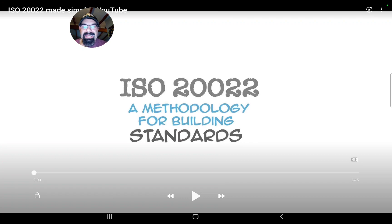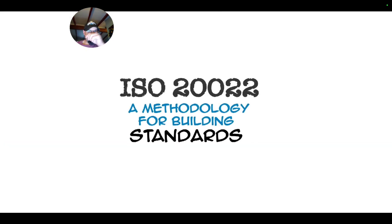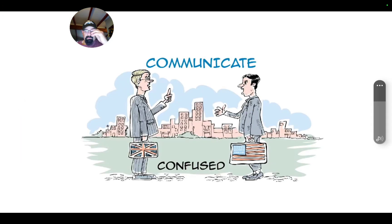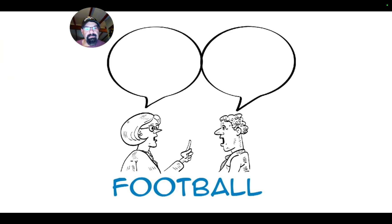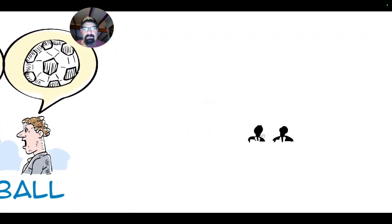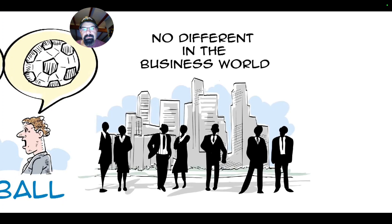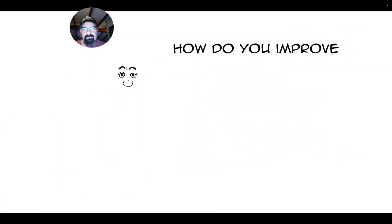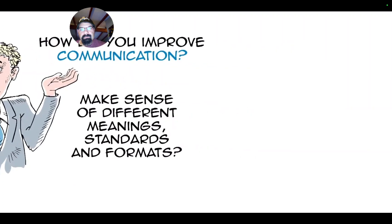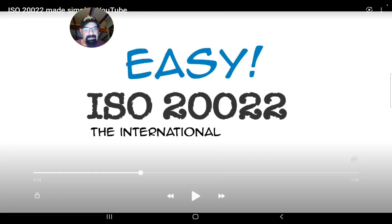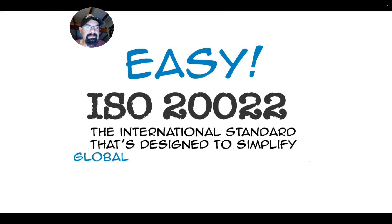It's interesting to see — I'll show you a couple different examples of what ISO-20022 is when they streamline it. Look at what they showed in 2012. When people communicate, they often get confused and end up misunderstanding each other. Take the word 'football,' for instance — it might mean one thing to an American and something entirely different to a Brit. Well, it's no different in the business world, where the stakes are way higher. A simple misunderstanding can lead to disastrous consequences. So how do you improve communication, make sense of different meanings, standards, and formats, and get everyone in the financial sector on the same page? Easy — by using ISO-20022.